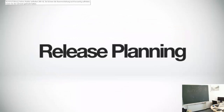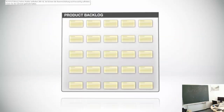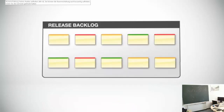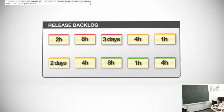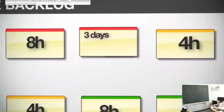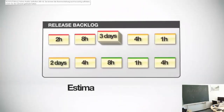Let's get back to release planning. To plan a release, the team starts with the product backlog and identifies the user stories they want to put into this release. These user stories then become part of the release backlog. The team then prioritizes the user stories and estimates the amount of work involved for each item. Sometimes larger user stories are broken down into smaller, more manageable chunks. The collection of all the estimates provides a rough idea of the total amount of work involved to complete the entire release.